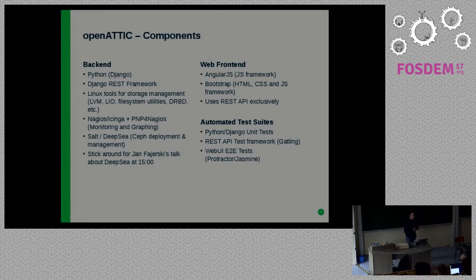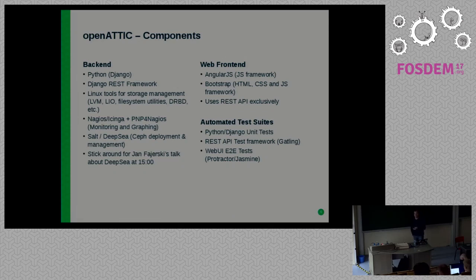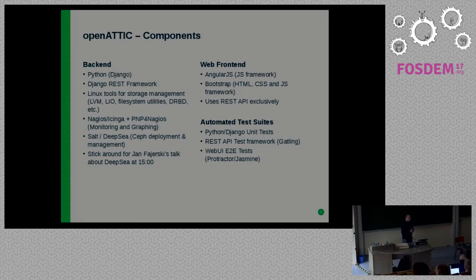The web front end, as I said, uses AngularJS and Bootstrap — pretty boring stuff in web developer terms by now, but it gets the job done. We put a strong emphasis on testing. Each commit or new functionality is supposed to be accompanied by a number of tests. We test on three different layers: Python unit tests using the Django unit test framework; the entire application is tested through a test suite called Gatling that we developed ourselves, which calls the REST API directly; and we also have automated tests for the full web UI based on Protractor and Jasmine, where you remote control a web browser to simulate clicks on the UI and check if it gives you the expected results.